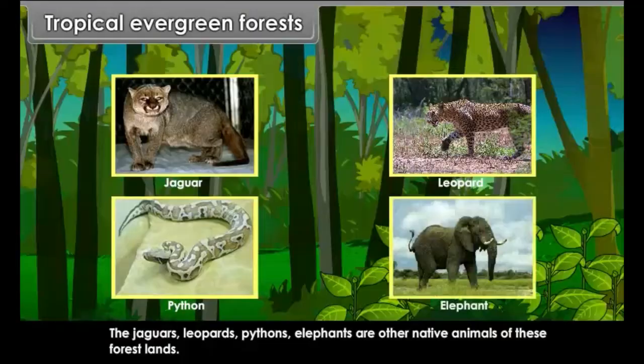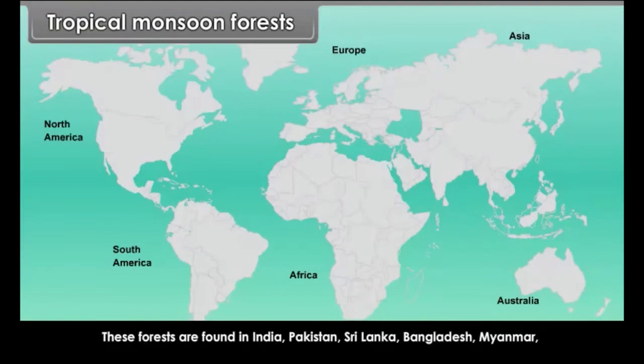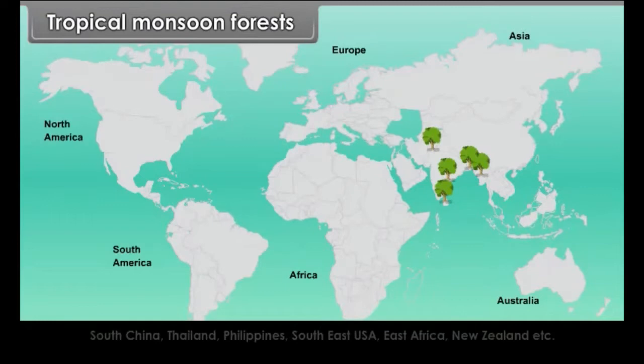Tropical Monsoon Forests are found in India, Pakistan, Sri Lanka, Bangladesh, Myanmar, South China, Thailand, the Philippines, Southeast USA, East Africa, New Zealand, etc.